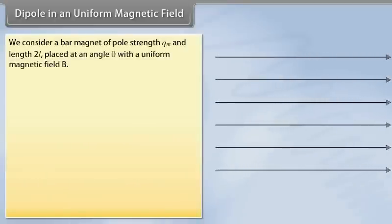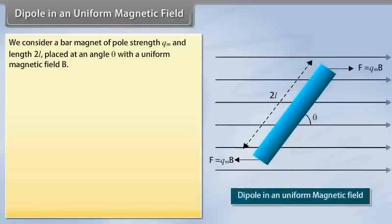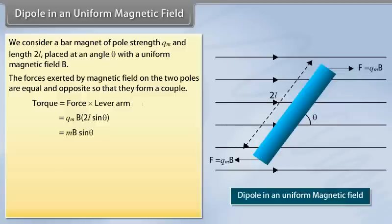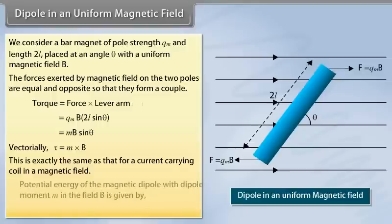Dipole in a Uniform Magnetic Field: Consider a bar magnet of pole strength Qm and length 2L placed at an angle θ with a uniform magnetic field B. The forces exerted by the magnetic field on the two poles are equal and opposite, forming a couple. Torque equals force times lever arm. Substituting values, torque τ = MB sin θ. Vectorially, τ = M × B. This is exactly the same as that of a current-carrying coil in a magnetic field. The potential energy of the magnetic dipole with dipole moment M in field B is given by U = −M · B.